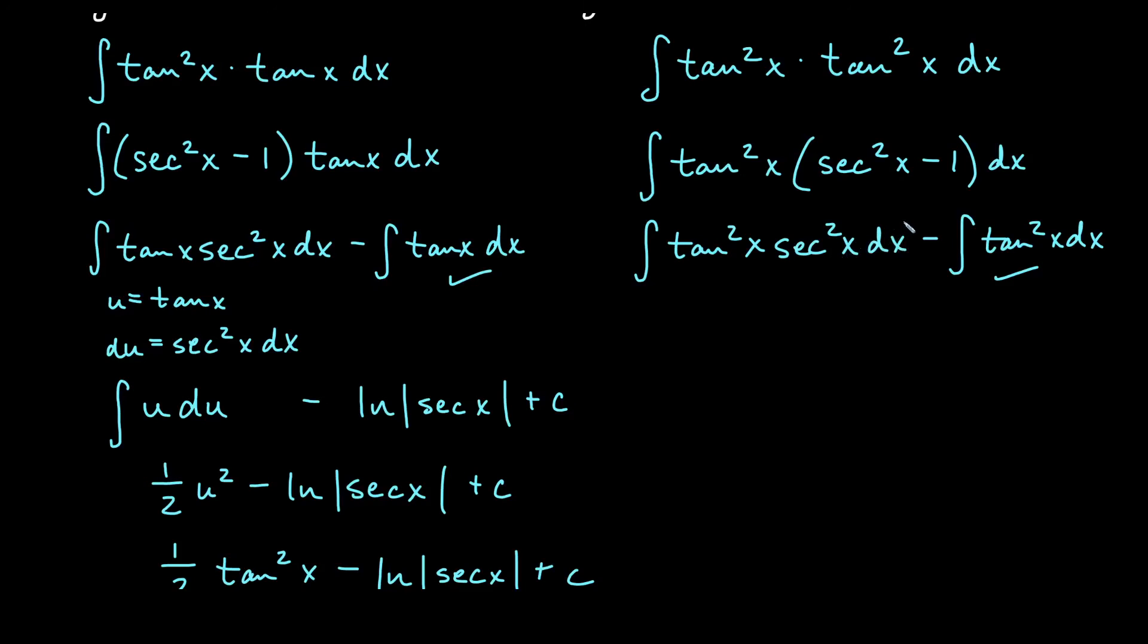If we notice, secant squared x is the derivative of tangent x. So the way I want to see this one is that this is actually already du here, and if that's du, then we want u to be tangent x. So u is going to be tangent x, and that means this tan squared x is actually going to be u squared. So we'll have u squared du minus, and remember how we would do this one? We did this one earlier in the video, and we changed it using Pythagorean identity. So we'll think of it as secant squared x minus 1.